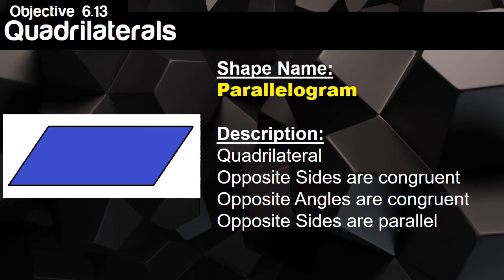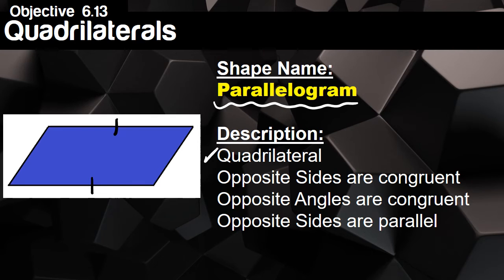Now we have a different type of quadrilateral called a parallelogram. This is a quadrilateral with three very specific properties. First, the opposite sides are congruent — the top and the bottom are exactly the same, and the left and the right are exactly the same. We can see in the parallelogram that the top and bottom are the same, and the left and right are the same.